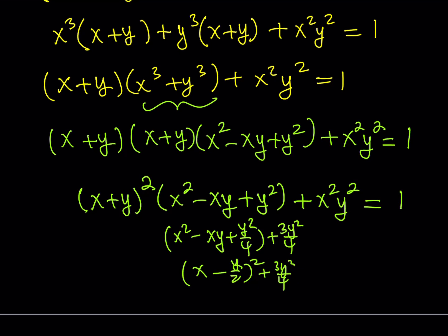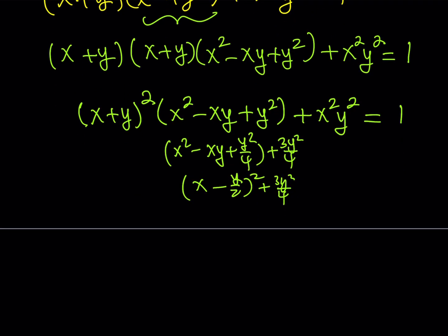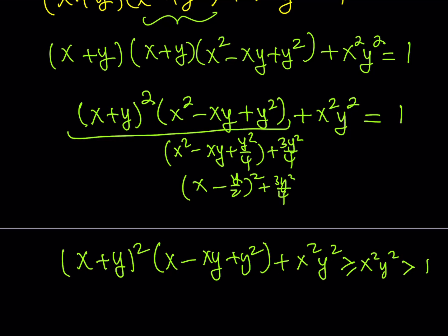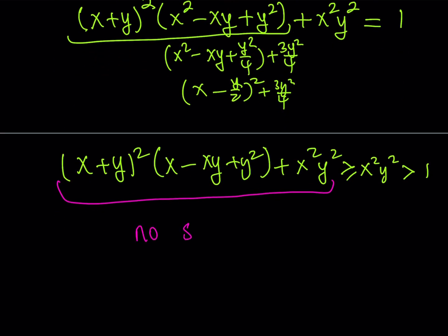Since the full expression equals (x+y)²(x²-xy+y²) plus x²y², and x²y² alone is greater than 1 for positive integers x and y (given that Case 1 with x minus y equals 1 already failed, x and y are not both trivially small), the whole expression is greater than 1. Therefore it can never equal 1, meaning there are no solutions to this equation.